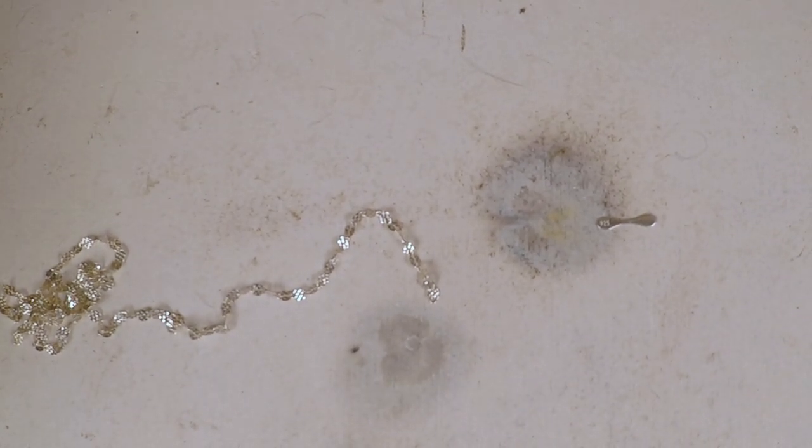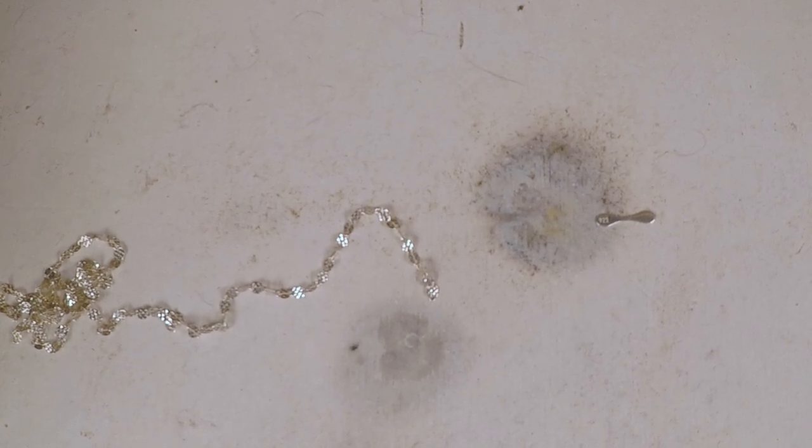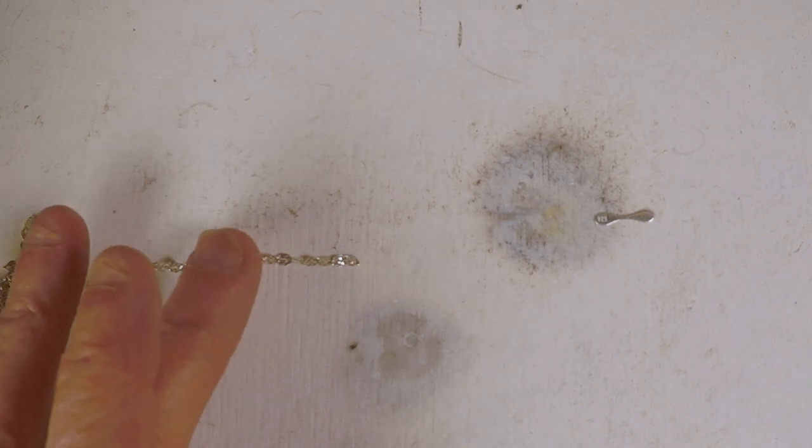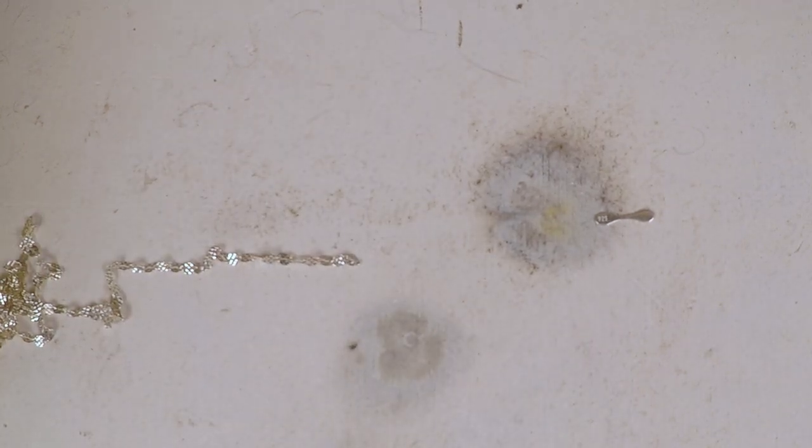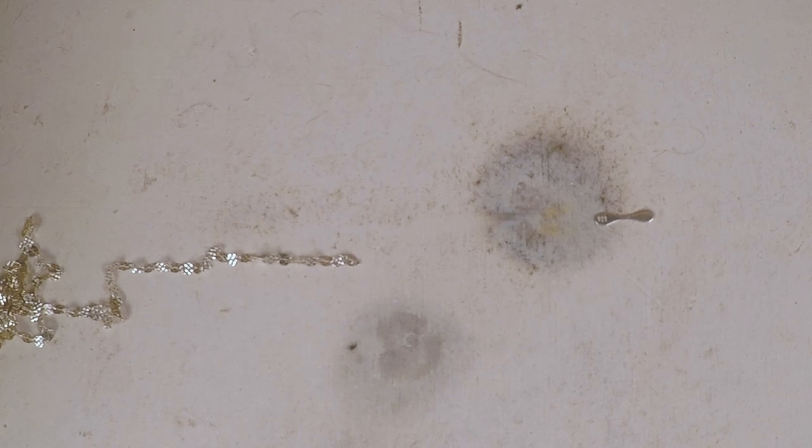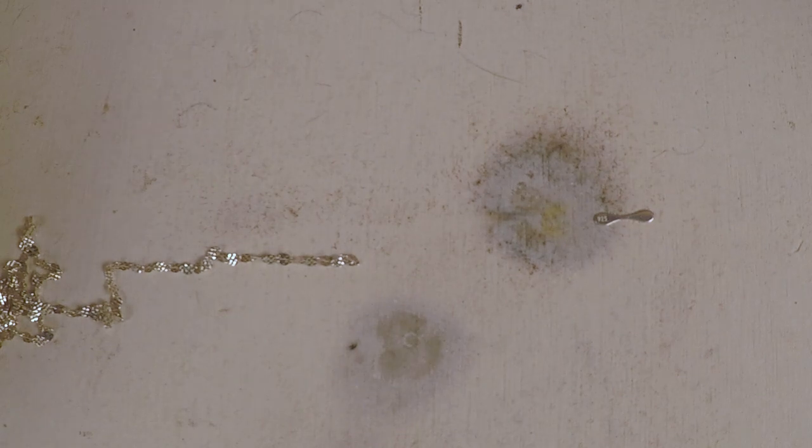I wanted to show you how to attach a sequin chain to an end tab. Sequin chains have no holes or links on them, so they're hard to solder to a jump ring. So what I'm going to do instead is use the alternate, which is an end tab. Let me show you how that's done.